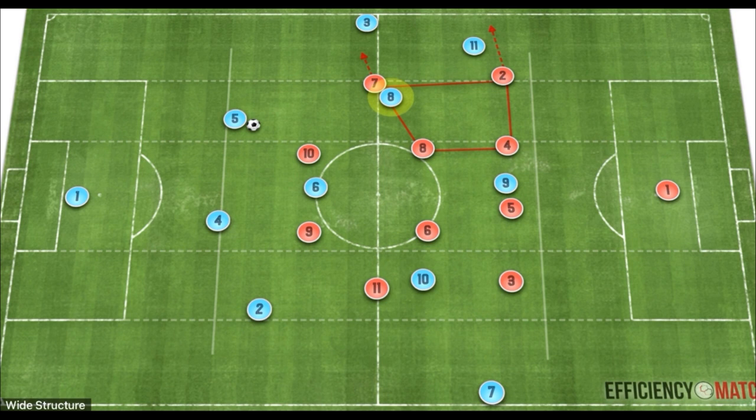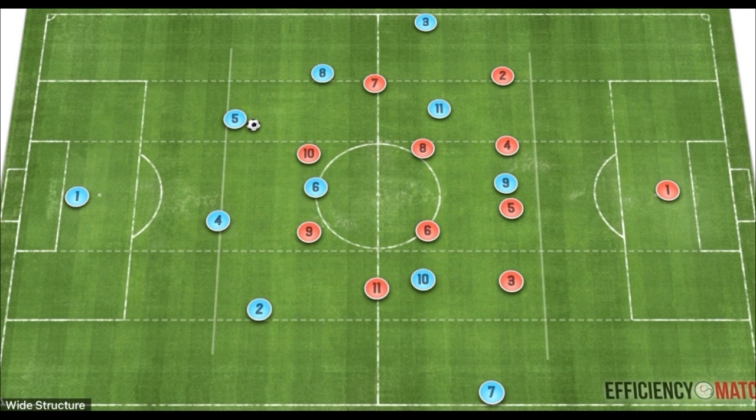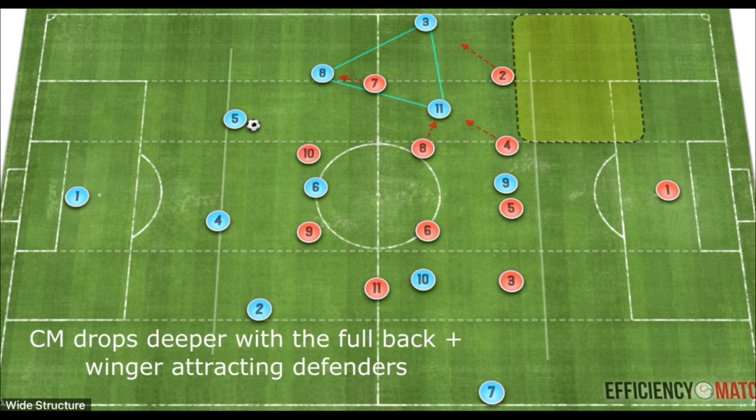For our next wide structure, we'll look at a rotation commonly used with our midfielder dropping deeper, becoming a deep-lying playmaker and moving more narrow, our winger inverting, and our fullback progressing and creating width. The wide structure is very similar to the original shape, but the biggest difference is now the width and the player between the lines are much deeper than previously. This attracts players from deeper lines, forcing them into a decision whether to jump higher and potentially leave space in behind.